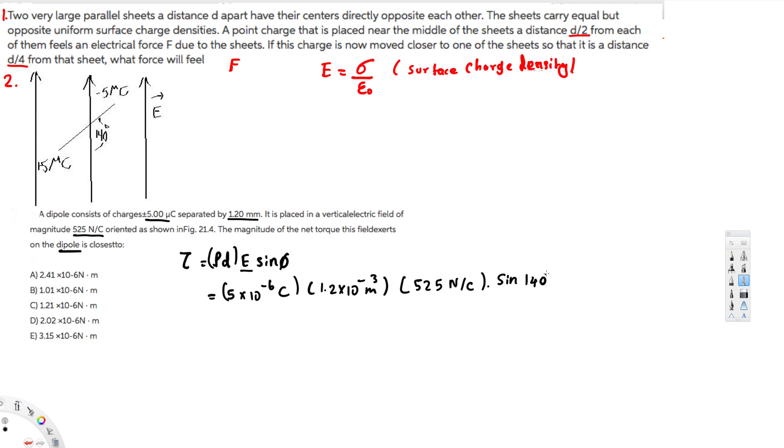Times sin φ, sin 140 degrees. If you calculate this value, you will get 0.000002 newton meters. If you want to see, they have given the answer in scientific notation, so you will get, if you convert this one into scientific notation, 2.02 times 10 to the power of minus 6 newton meters, and that is the answer.